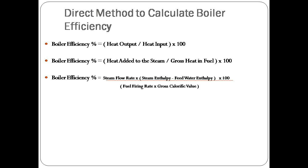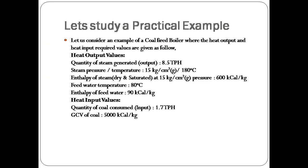Now let's study a practical example. Let us consider an example of a coal-fired boiler where the heat output and heat input required values are given as follows. Heat output values: quantity of steam generated is equal to 8.5 ton per hour.